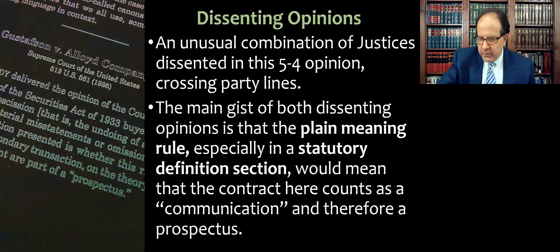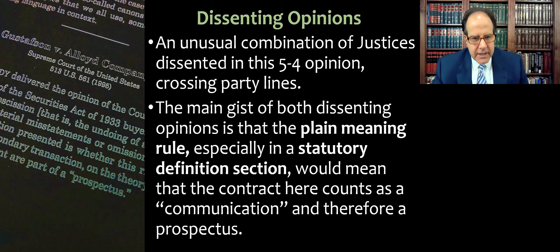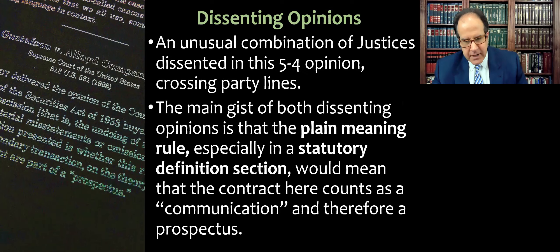We have dissenting opinions, and it's an unusual combination of justices — this is a 5-4 opinion, but it did not split on the usual conservative-liberal lines. Instead, Scalia and Thomas teamed up with Ginsburg and Breyer. The main gist of both dissenting opinions is that the plain meaning rule should control. Especially with a statutory definition section, they argue we don't need to apply any canons — we can just follow the plain meaning. That means the contract would count as a communication, and therefore is a prospectus, and WinPoint should be able to get out of the deal.